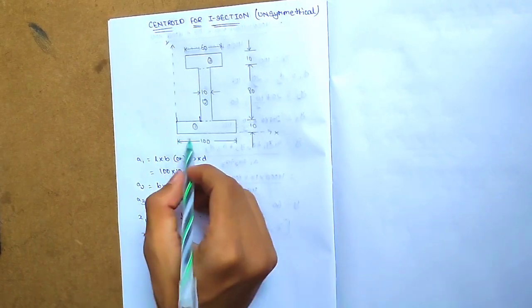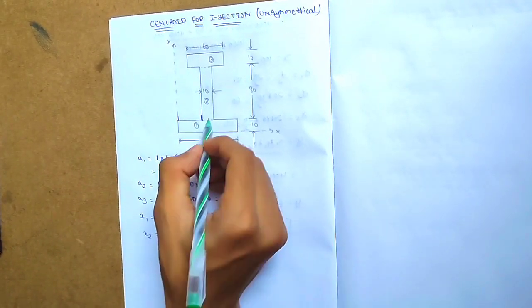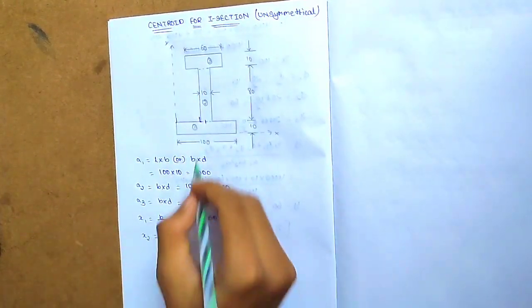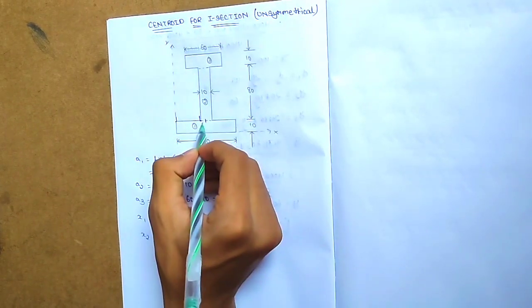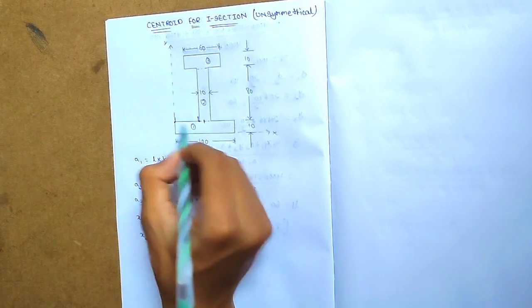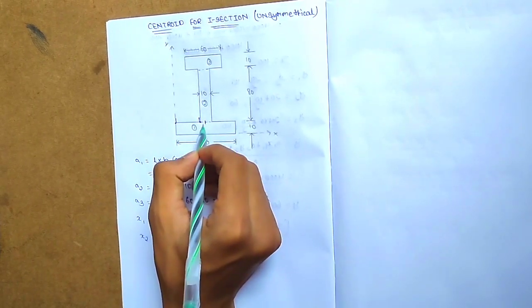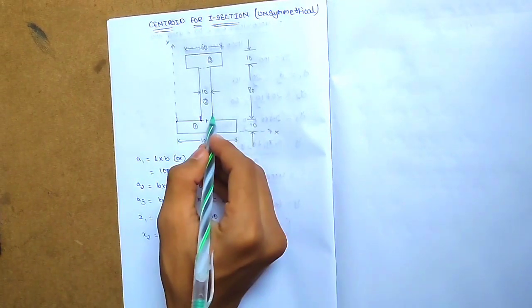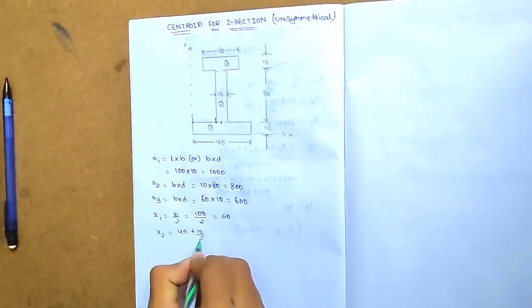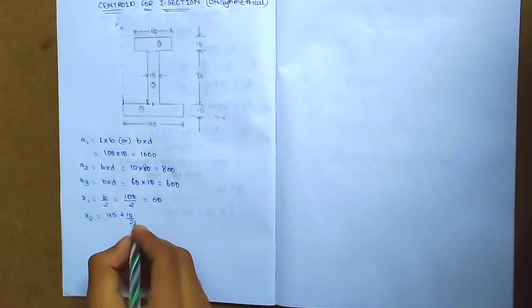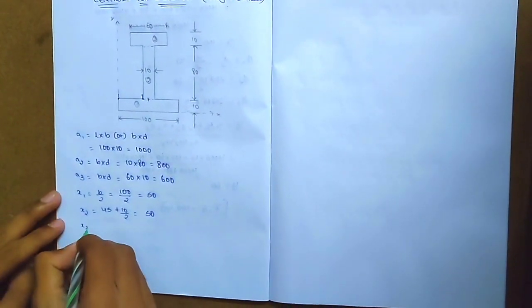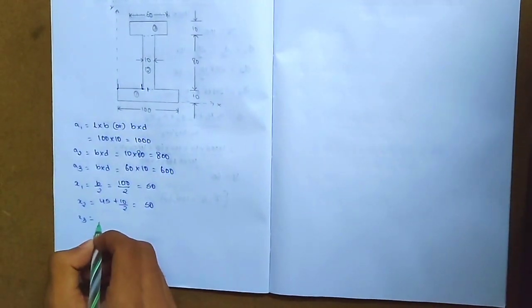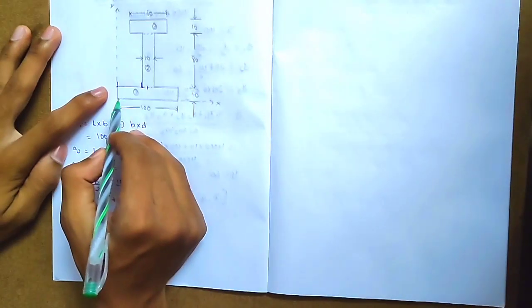For x1, the first rectangle breadth is 100, so divide by 2 to find the center: 100 by 2 equals 50. So x1 equals 50. For x2, the second rectangle breadth is 10, so 10 by 2 equals 5. The reference point is at 45 plus 5, so x2 equals 50. The x-bar value will also be 50.